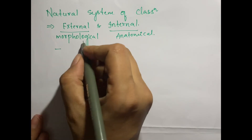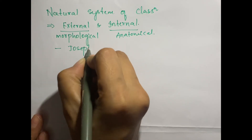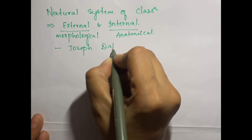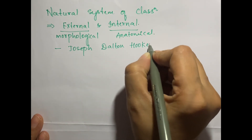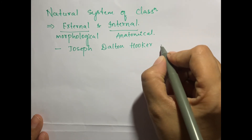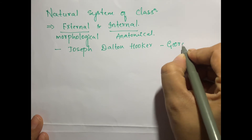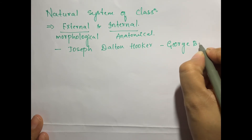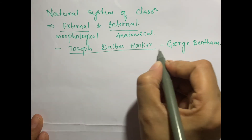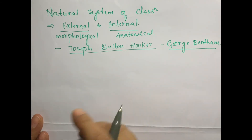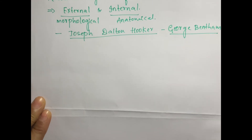The Natural system of classification was proposed by Joseph Dalton Hooker, and the credit is also shared by George Bentham. So these are the two people who actually gave the natural system of classification.